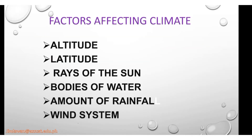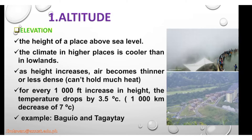For the factors affecting climate, we have six: altitude, latitude, rays of the sun, bodies of water, amount of rainfall, and wind system. First is altitude — the elevation of a place. Examples are Baguio and Tagaytay, where cold conditions are normal. The climate in higher places is cooler than in lowlands. As height increases, air becomes thinner or less dense and can hold less heat. For every 1,000 feet increase in height, the temperature drops by 3.5 degrees Celsius.